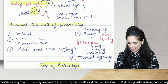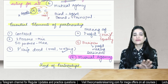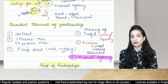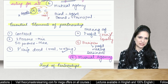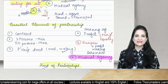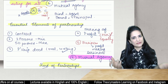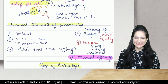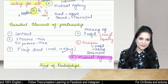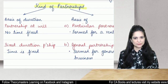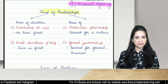Mutual agency means a partner can bind as well as be bound by the act of other partners. When we combine all six elements we get a partnership. Mutual agency is the most important element — if there is mutual agency they are partners; if not, they are not partners. Sharing of profit alone is not conclusive evidence of partnership because you can share profits even with employees. Mutual agency is the cardinal principle of partnership.